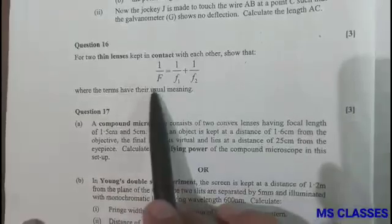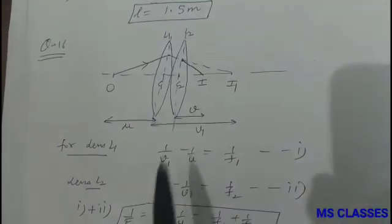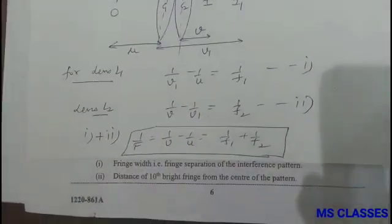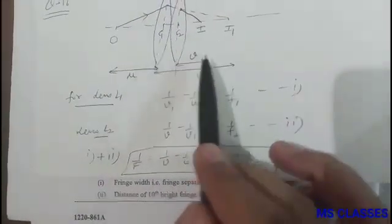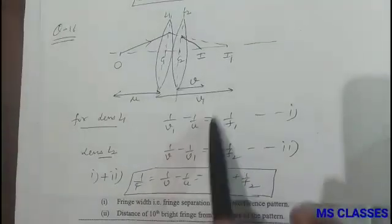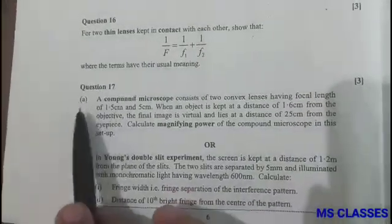Here you can see the two lenses are kept in contact, so this is how we draw the diagram and do the derivation. So 1 by V1, V1 is the image for the lens L1 which is the object for the lens L2. So if you add both you get 1 by F as 1 by F1 plus 1 by F2.